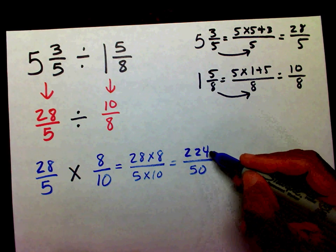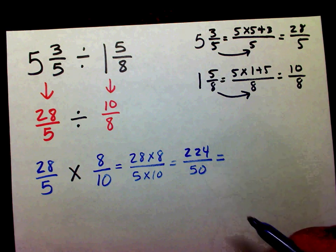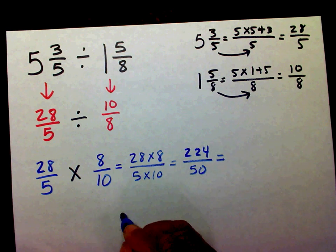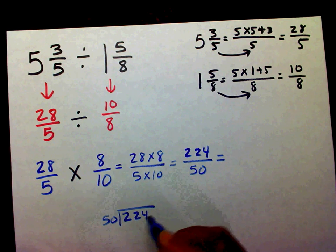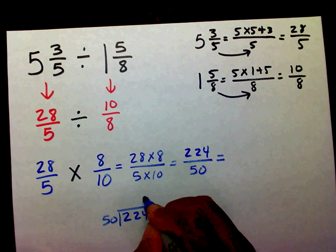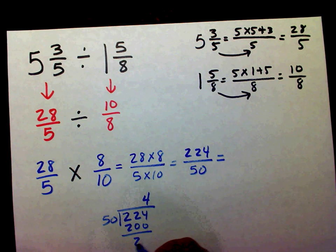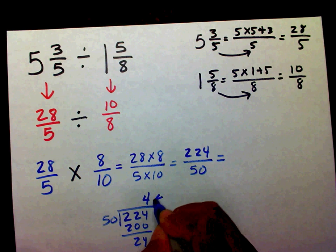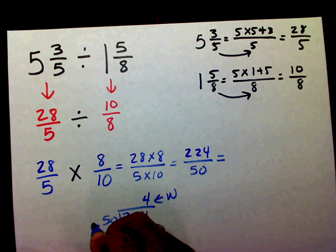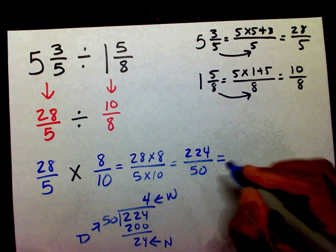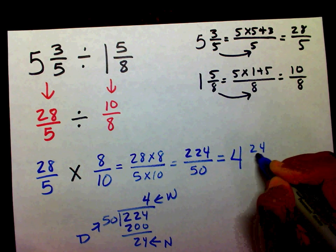This is an improper fraction because my numerator is larger than my denominator, so I need to divide. I'm going to divide two hundred twenty-four by fifty. That goes in there four times. So this is going to be four and twenty-four fifty-ths.